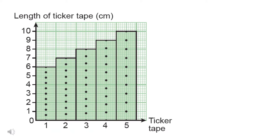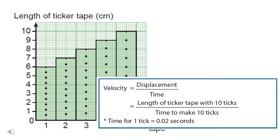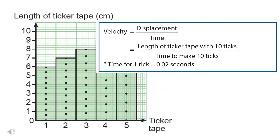Can you determine the total time for every strip? The strips were arranged and pasted on a graph paper. From this diagram, we can determine the displacement. Using the formula — velocity equals displacement divided by time — we can calculate the velocity of each strip.